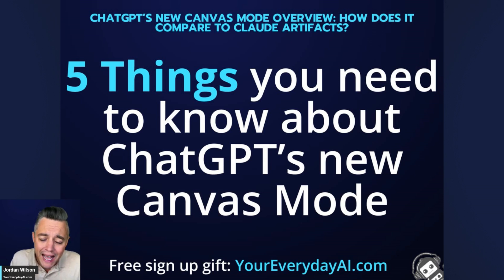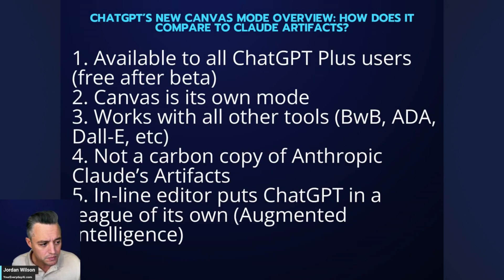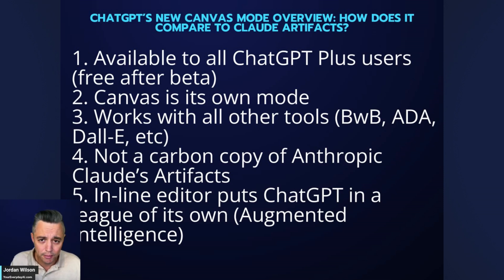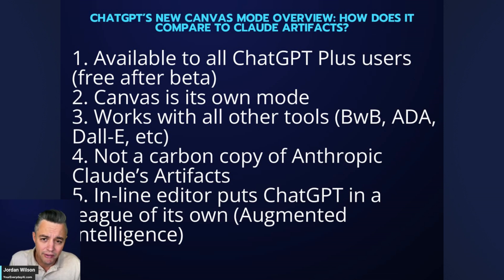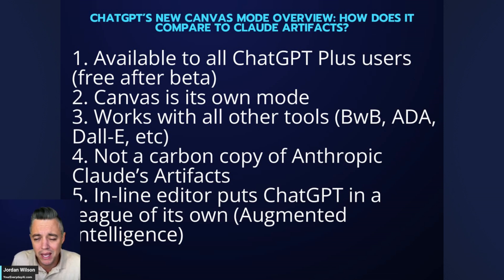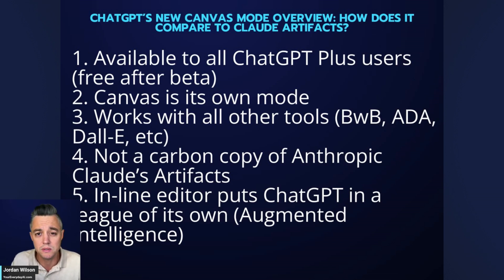Let's go through the five things you need to know — and I might have a bonus tip at the end. Number one: Canvas is available right now to all ChatGPT Plus users. OpenAI said once it's out of beta it will be available for free users, but honestly I wouldn't hold my breath — it could be many months or longer.